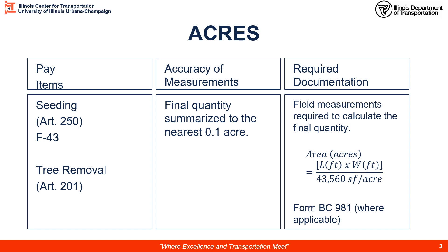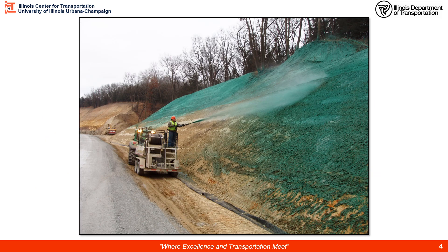Let's get started with acres and move through these pay units. The items paid by the acre include seeding and tree removal. We're going to show you an example for seeding. Accuracy of measurement in the middle column is 0.1 acres, and then we have our required documentation.